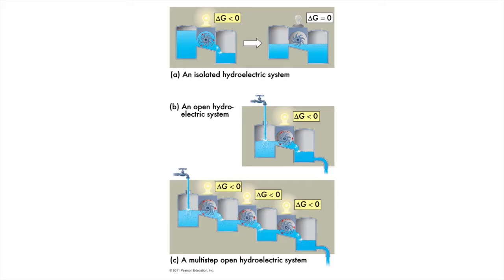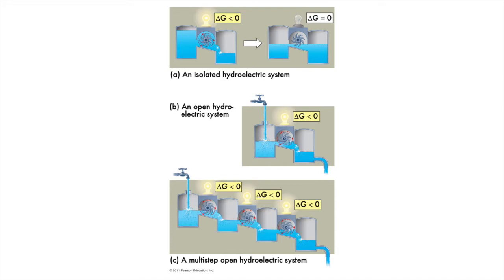If a hydroelectric system were closed, we might be able to get some work out of it, so long as there is some potential energy to convert to kinetic energy. At time point one, some water spins the turbine and the lightbulb shines. At time point two, the water level is level all the way across — there's no potential energy left to exploit, and the turbine stops spinning. Lights out. To keep the system working, we have to open the system up. There has to be new material coming in, and somewhere for the water at the bottom to leave.